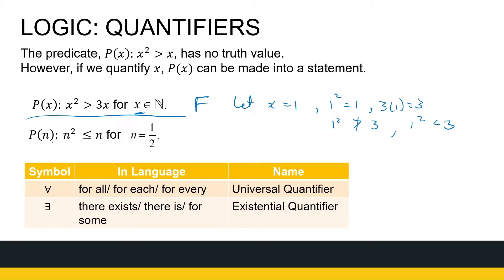Next: a statement about n, but n has only one specific value. n squared is less than or equal to n, where n equals one half. Well, n squared is then equal to one quarter, and one quarter is less than or equal to one half. So this statement is true.